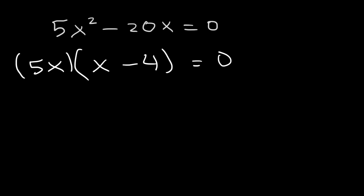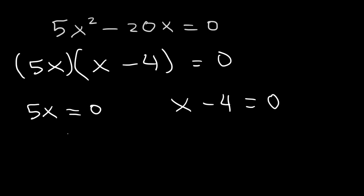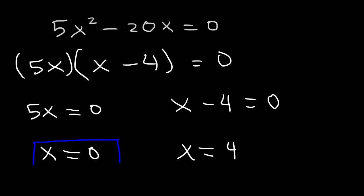Just like we did before, we're going to set each factor equal to zero. If 5x is equal to zero, that means x is equal to zero. And for the second factor, if we add 4 to both sides, x is equal to 4. So these are the two answers: x can be zero or 4.